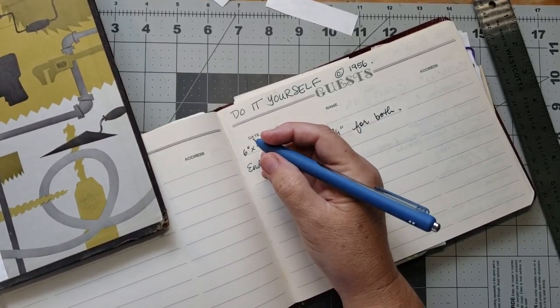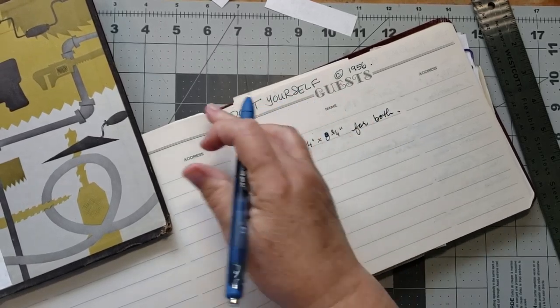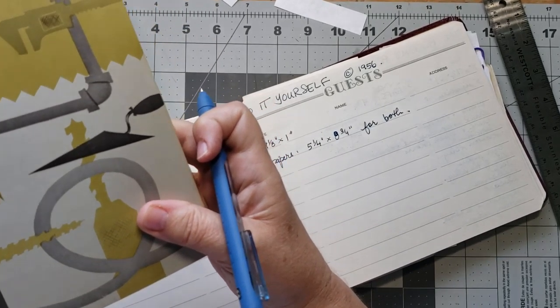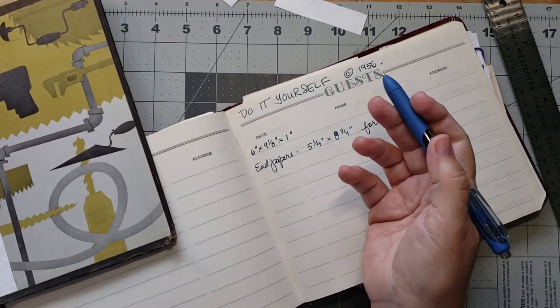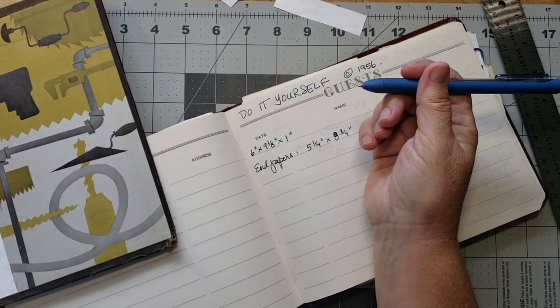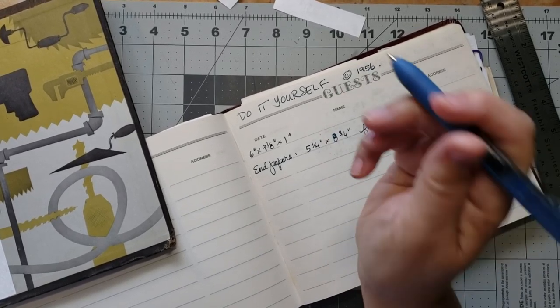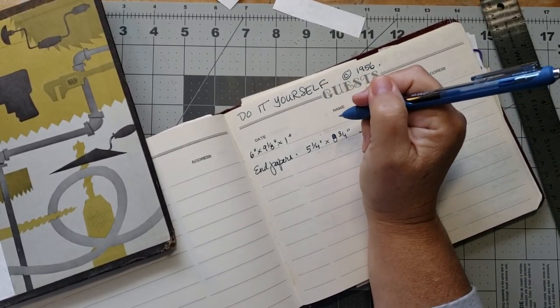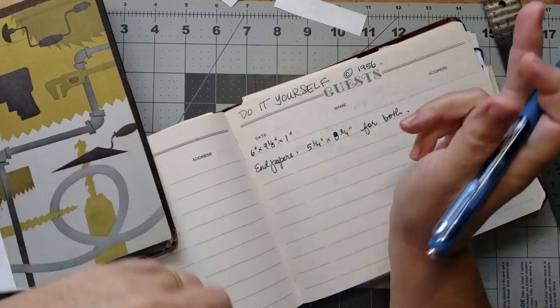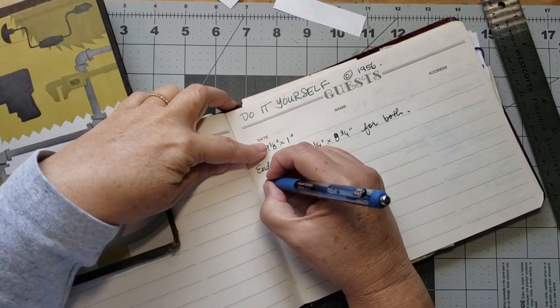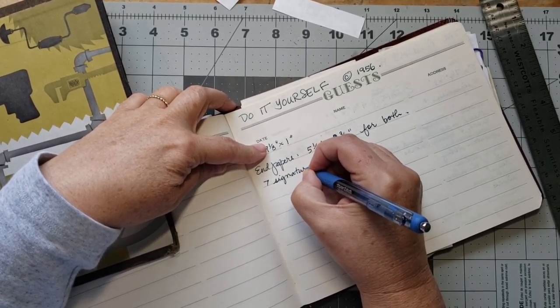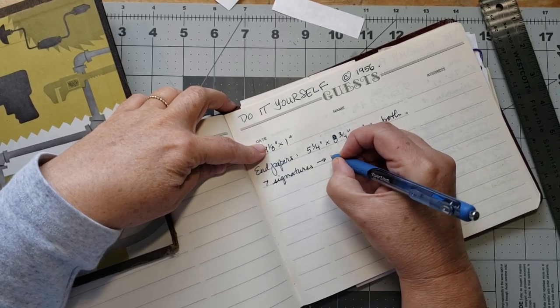I'm going to be putting in, I changed my mind. If you follow me on Instagram, because I'm over there today too. Initially I had put five signatures with seven sheets of paper each into my book press, but I decided to make them smaller. I decided to actually switch that up and I've done seven signatures with five leaves each.